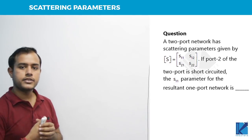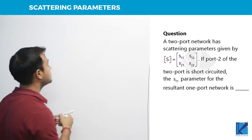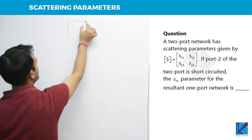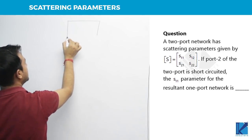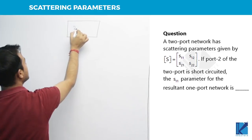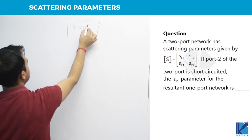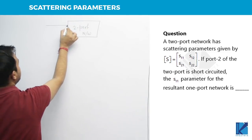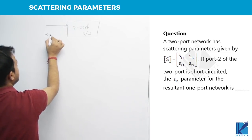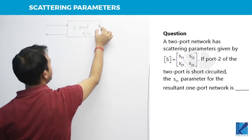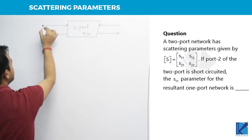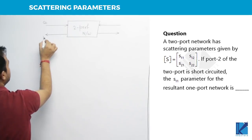So now first let us understand what is meant by scattering parameters. When we talk about scattering parameters, we show that there is a 2-port network like this. Then we show waves, basically waves being incident on a 2-port network. This is said to be A1, B1.